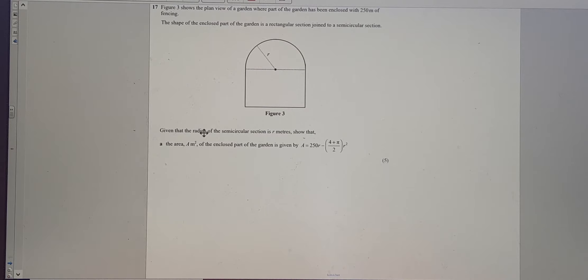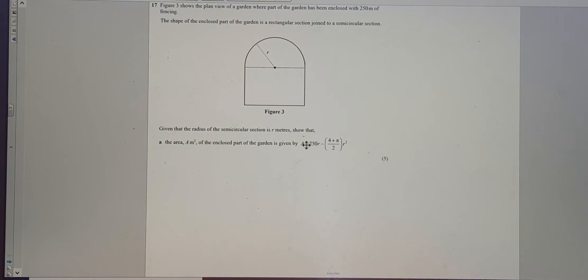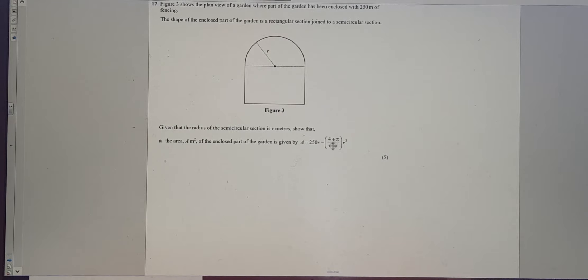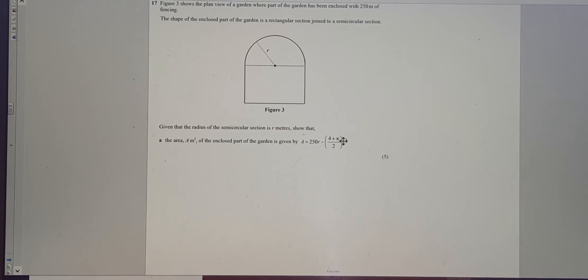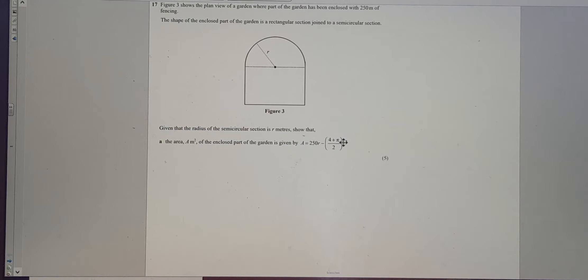Given that the radius of the semicircular section is r metres, show that the area, a metre squared of the enclosed part of the garden, is given by a, the area, equals 250r minus 4 plus pi over 2, all multiplied by r squared. Third, my thinking.